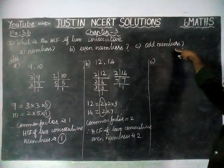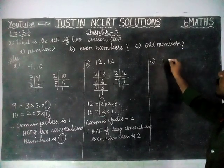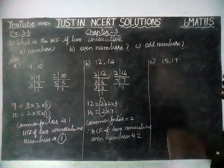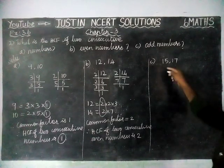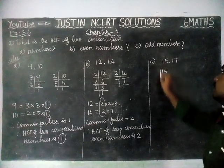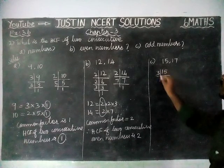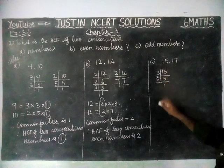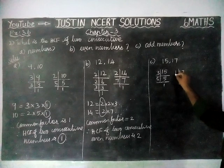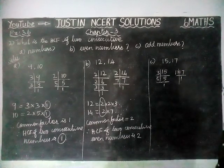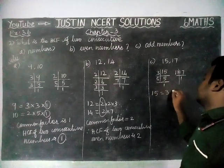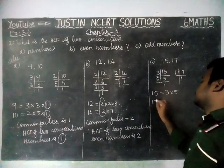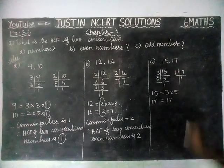Next, Part C — 2 consecutive odd numbers. We will take 15 and 17. You can also take other odd numbers like 21 and 23, or 25 and 27. For 15, we divide by 3 — then by 5. For 17, since 17 is a prime number, we have 1 × 17 only. So factors of 15 are 3 × 5, and factors of 17 are 1 × 17.